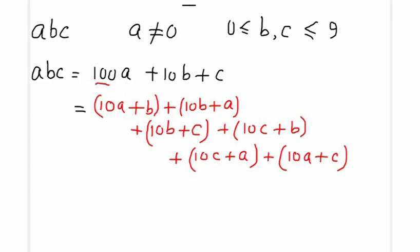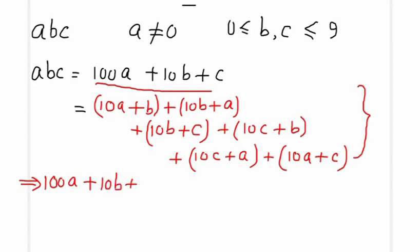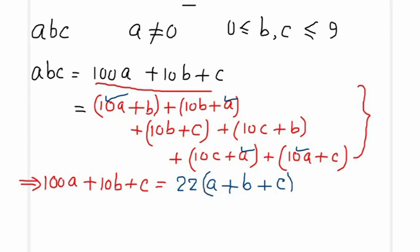Adding all six 2-digit numbers together, we get 22A + 22B + 22C, which equals 22(A + B + C). So the equation becomes 100A + 10B + C = 22(A + B + C).